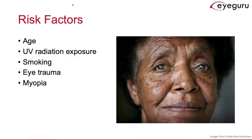One of the most significant risk factors for nuclear sclerotic cataracts is age. Other factors associated with increased risk include a history of UVA radiation exposure, a history of smoking, eye trauma, as well as myopia.